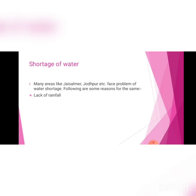First is lack of rainfall. Rain is the most important source of water on the earth. It helps in refilling the oceans, lakes, ponds, rivers, wells, etc. But if there is no rain, then there will be a shortage of water.